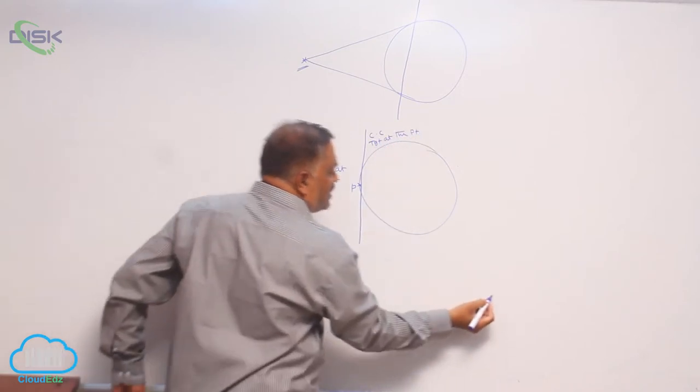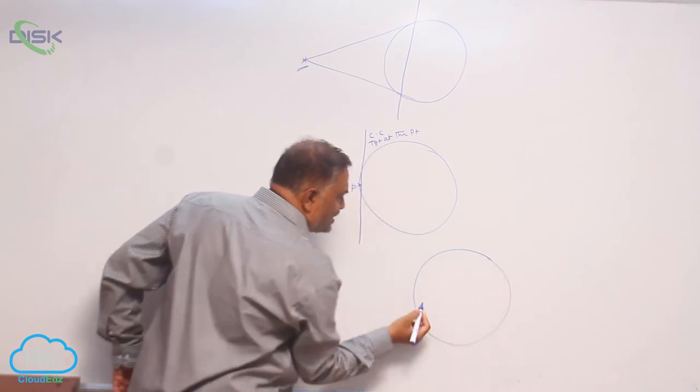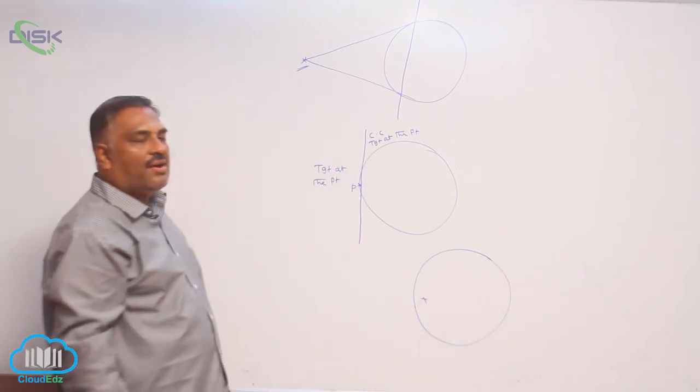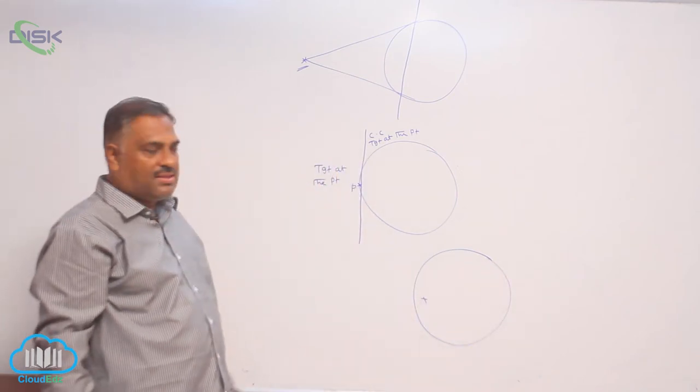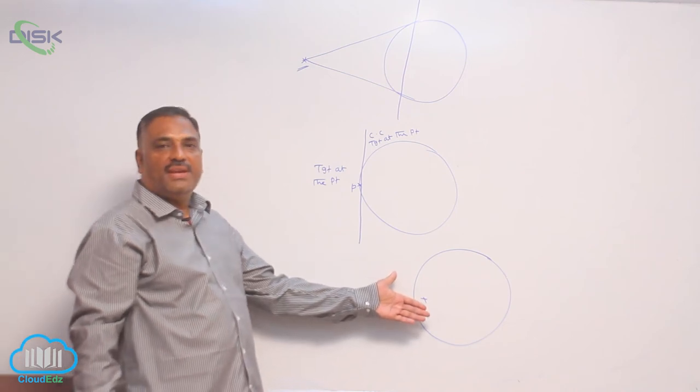When the point lies inside the circle, no chord of contact is possible, because no tangents can be drawn from a point inside the circle.